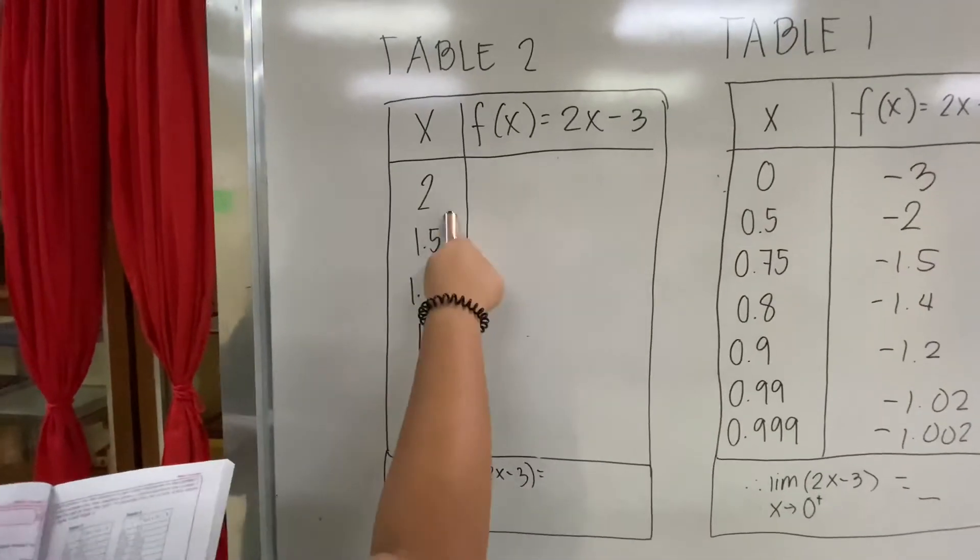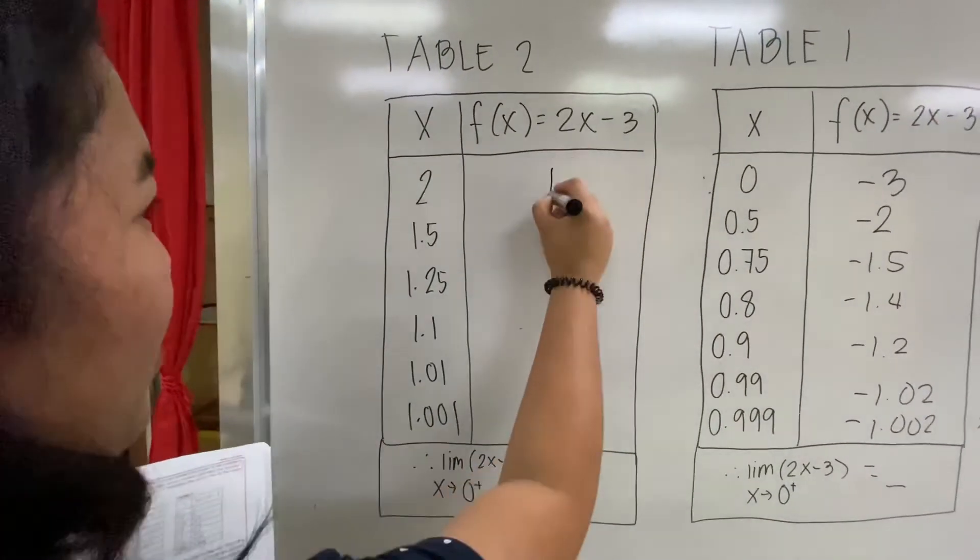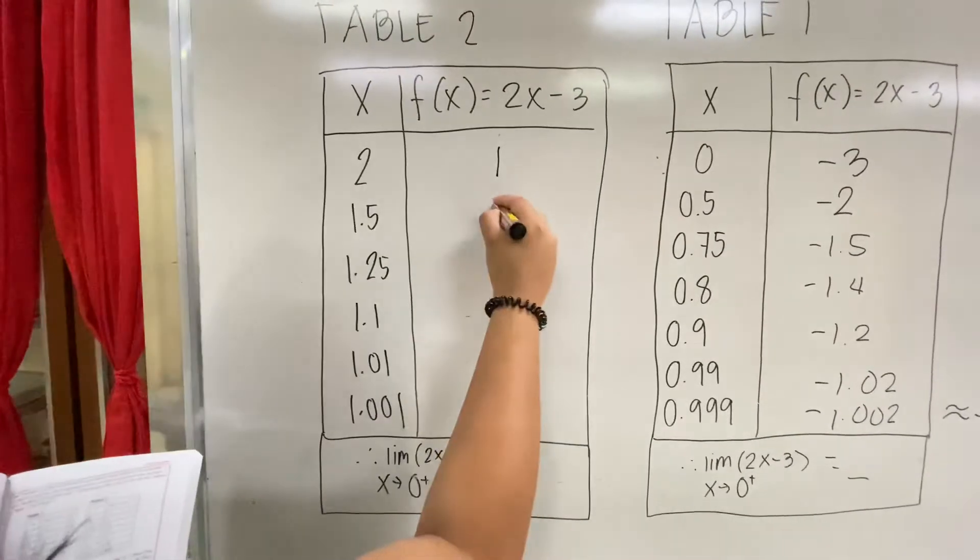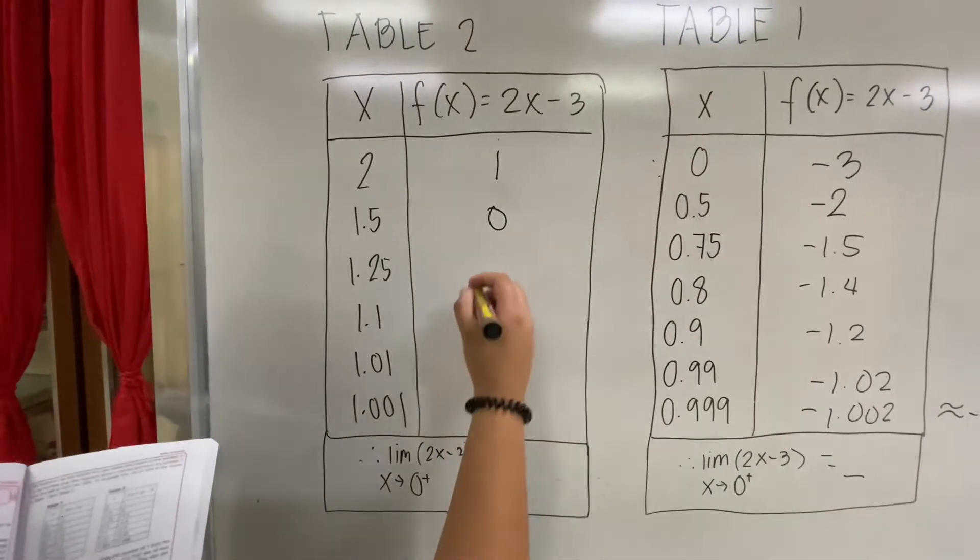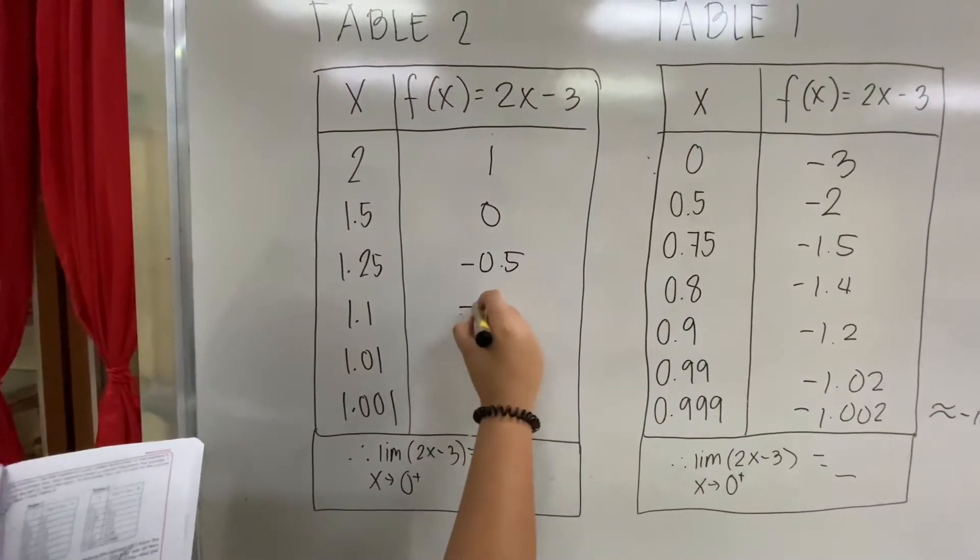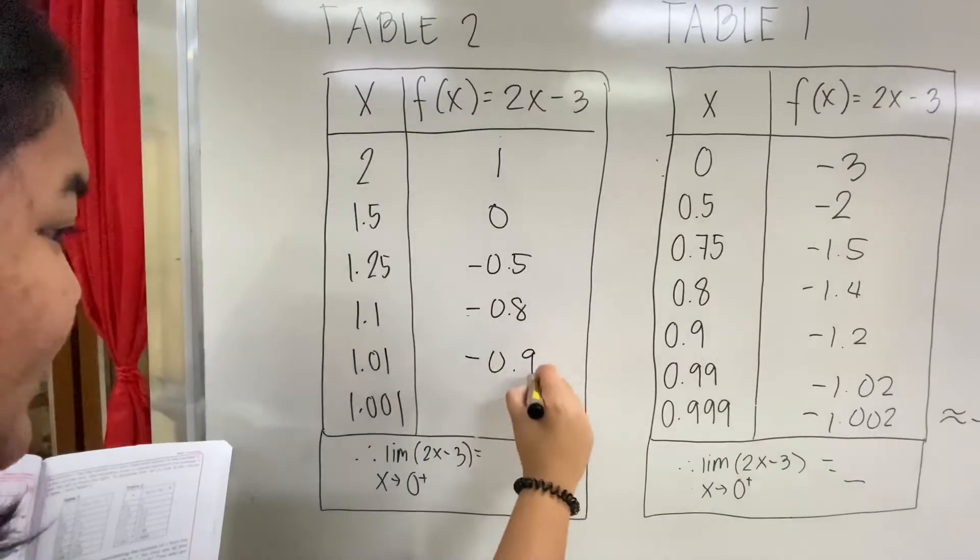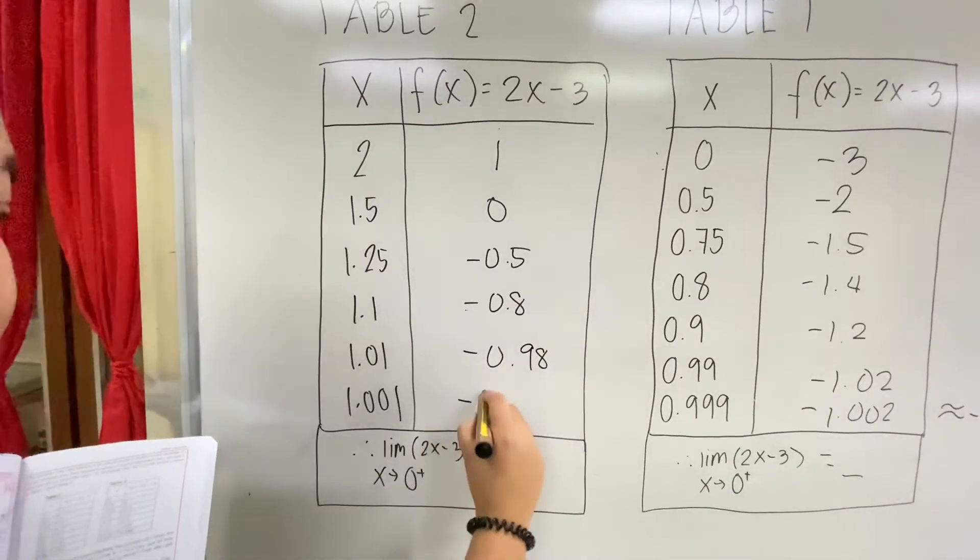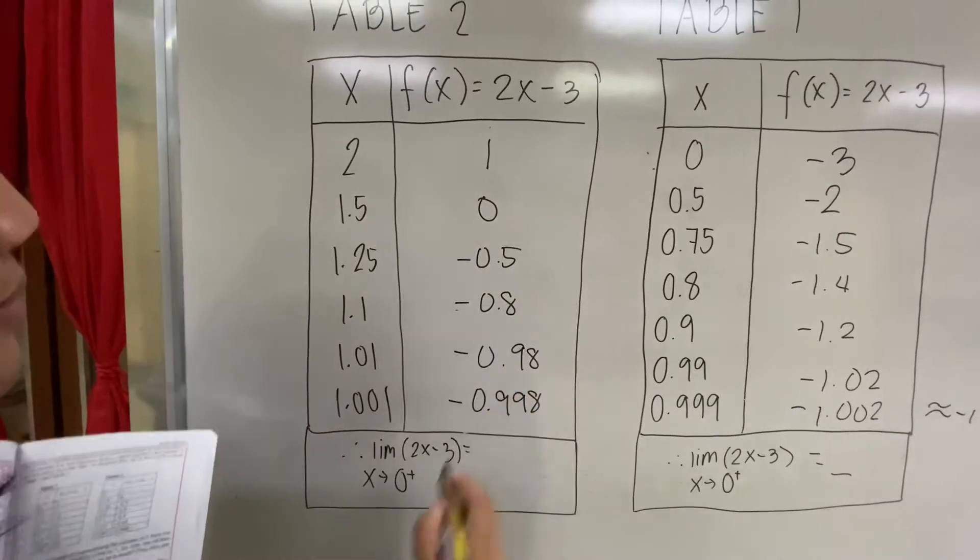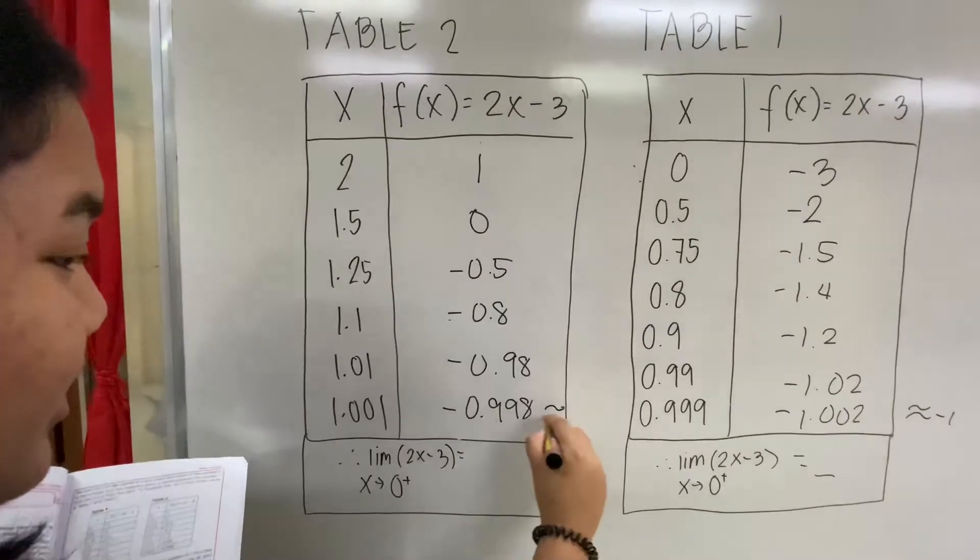Then, in table 2, we have 2 and 2x - 3, and with that, we get 1. 1.5 and 2x - 3, we get 0. And so on and so forth: -0.5, -0.8, -0.98, and lastly, -0.998. And notice that they all go to -1.